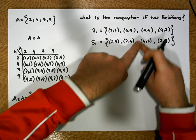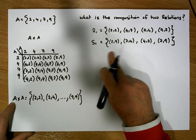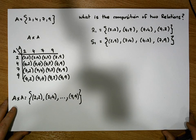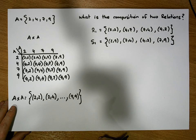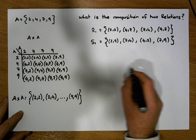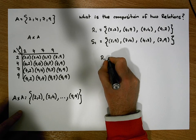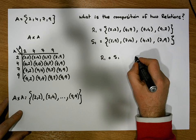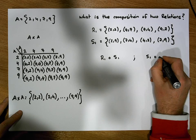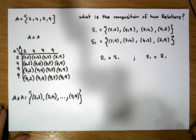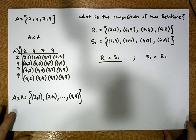So we have two relations R1 and S1, both of which are subsets of the cross product of A with itself, so both are relations by definition. What we'd like to construct is the composition of two relations — first R1 after S1, and then S1 after R1. We operate from right to left, so let's concentrate on R1 after S1 first.